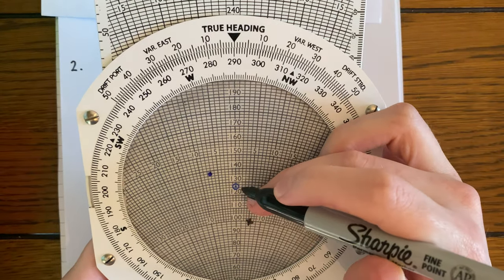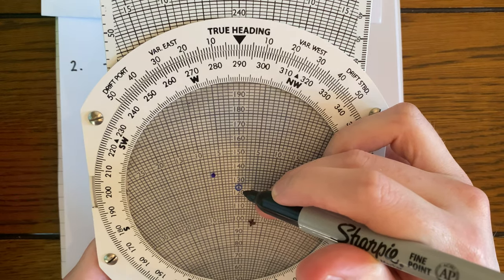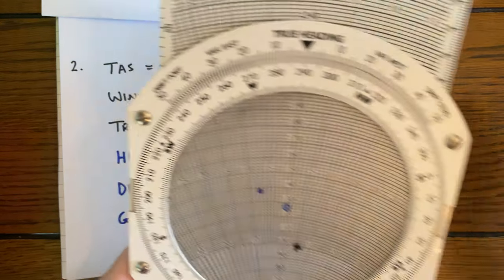And our ground speed, well, that's just going to be simply reading off what our center point says. And that looks to me like 127 knots.